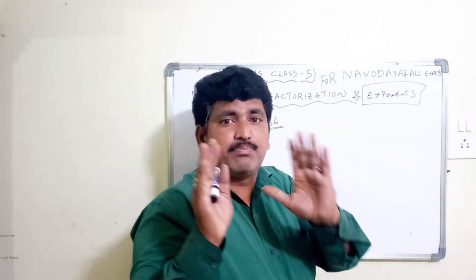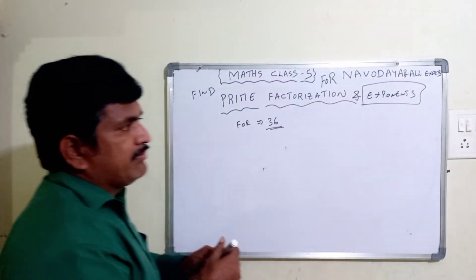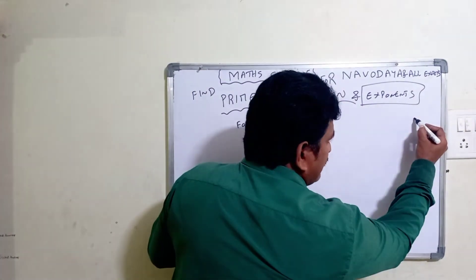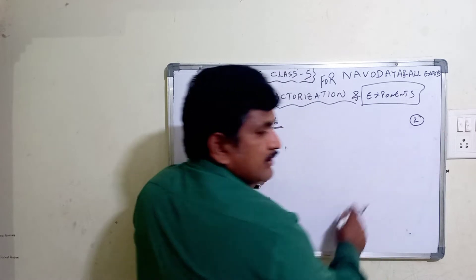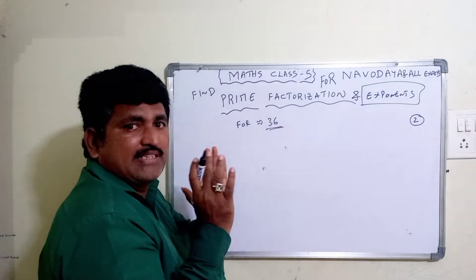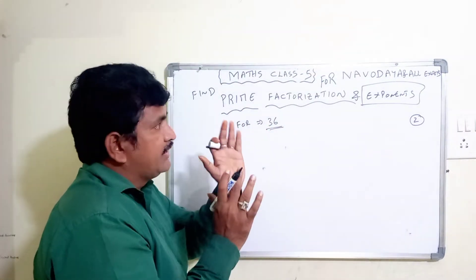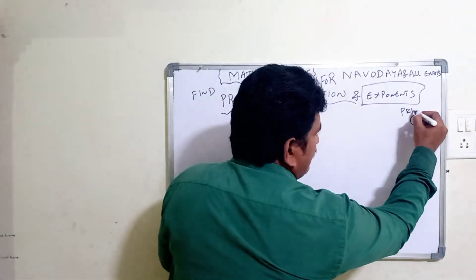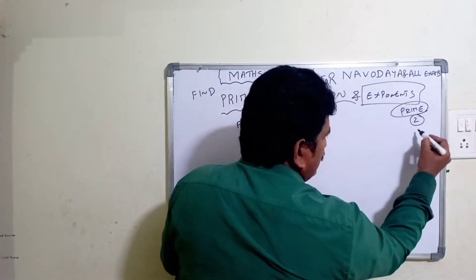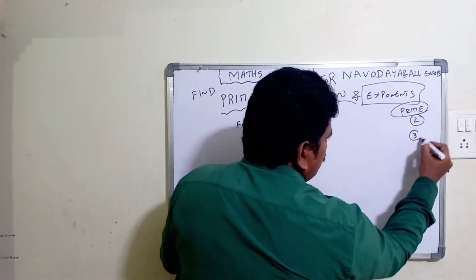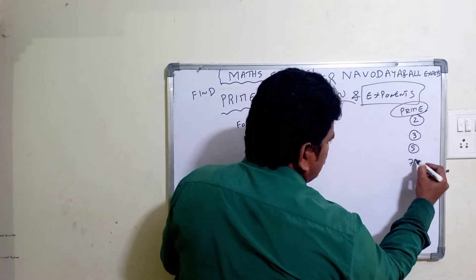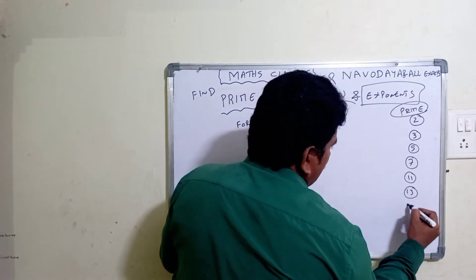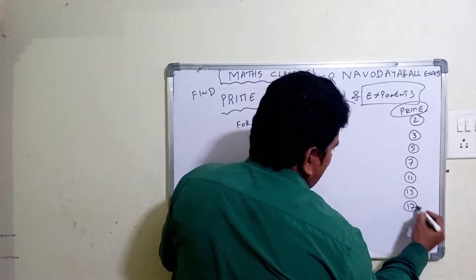Prime factorization means factorization with prime numbers — numbers which have only two factors, one and itself, are called prime numbers. So prime numbers are 2, 3, 5, 7, 11, 13, 17, etc.